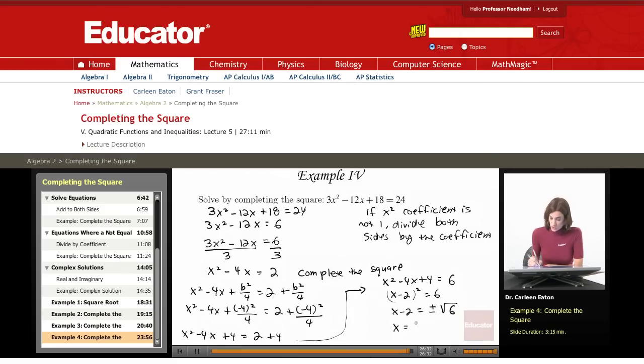So x equals 2 plus or minus the square root of 6. So this problem took an extra step. After isolating my variables on the left and my constants on the right, I saw that my leading coefficient was not 1. So I had to divide both sides of the equation by that coefficient 3.